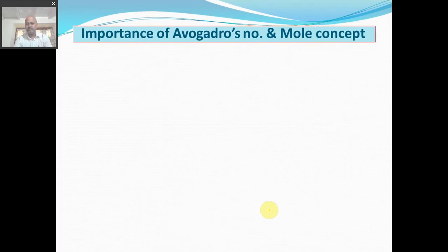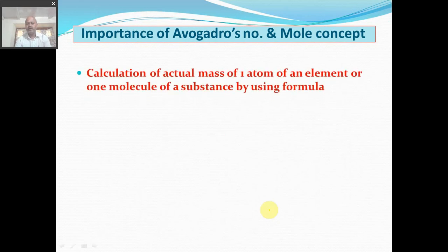Next is the importance and applications of Avogadro's hypothesis and mole concept. The first application is that we can now calculate the actual mass of one atom of any element, or one molecule of any element or compound. Before this, the masses we studied were only relative masses. Now we are in a position to calculate the actual mass of one atom of an element or one molecule of a substance.